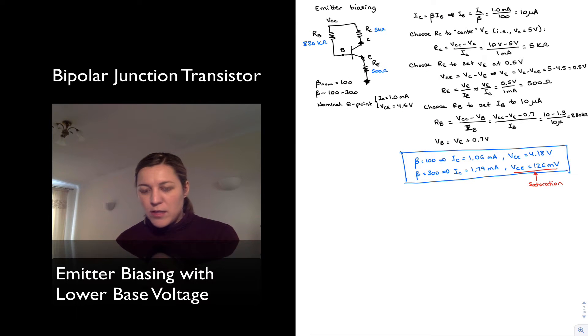We're going to take a closer look at emitter biasing, but now we're going to make a slight change to our original emitter biasing configuration. We're going to lower the value of the base voltage, Vb.